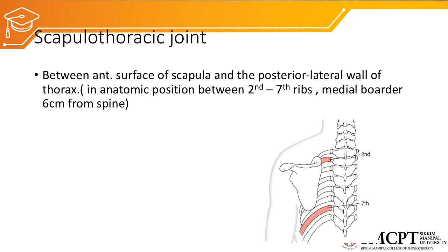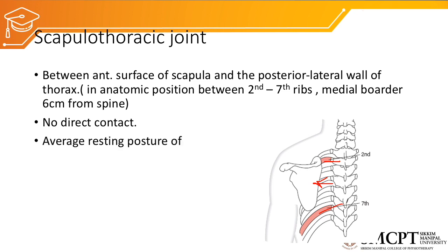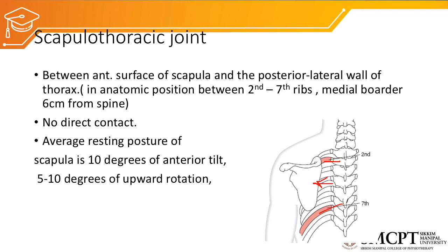The scapulothoracic joint is formed between the anterior surface of the scapula and the posterior lateral wall of the thorax. In anatomical position it lies between the second to seventh rib and is about six centimeters away from the spine. There is no direct contact between the scapula and the ribs; the muscles of the thorax and the subscapularis muscle form this joint, so it is also called a false joint. The average resting position is about 10 degrees of anterior tilt, 5 to 10 degrees of upward rotation, and 35 degrees of internal rotation.